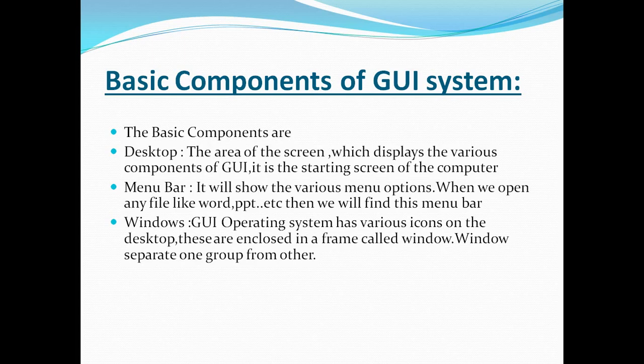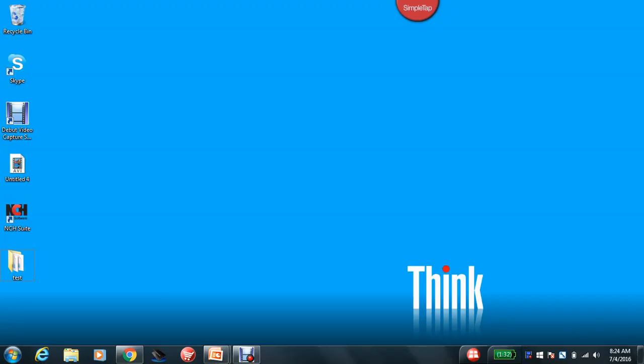As I said, desktop is an area of the screen which displays the various components of the GUI. This is the desktop. When you log on or connect to your computer, this is the first screen that you will be seeing.